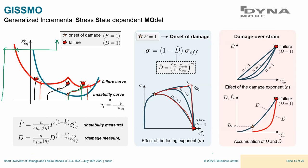Question: How do damage models affect strength and stiffness while failure models don't? A failure model has no interaction with the stresses — based purely on strain, it fails abruptly with no stress dissipation. A damage model uses the damage variable to reduce stress, inducing softening. In GISSMO, you can even adjust the level of coupling between the stress and the damage variable.